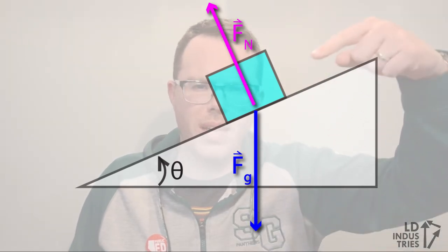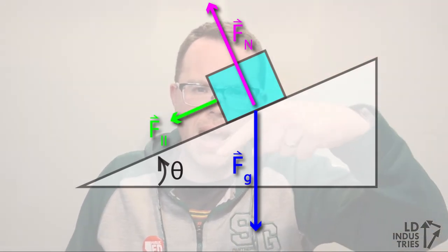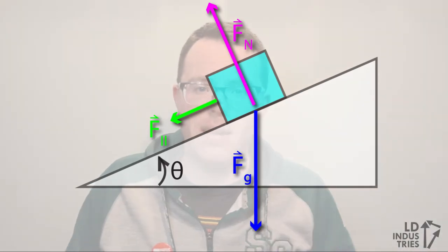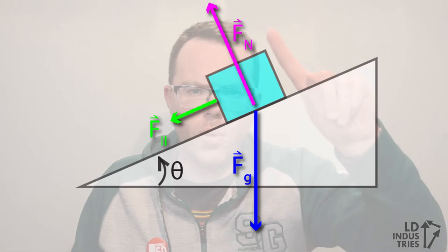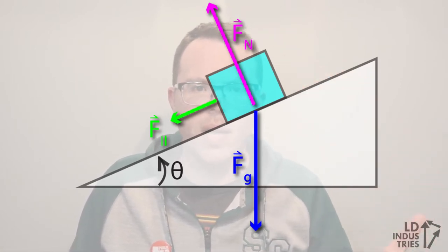There's also this other strange force that kind of pulls the box down the ramp. We're going to look at that in a moment. Now how do we figure out the value of that normal force if it's not exactly the same as gravity just in the opposite direction?